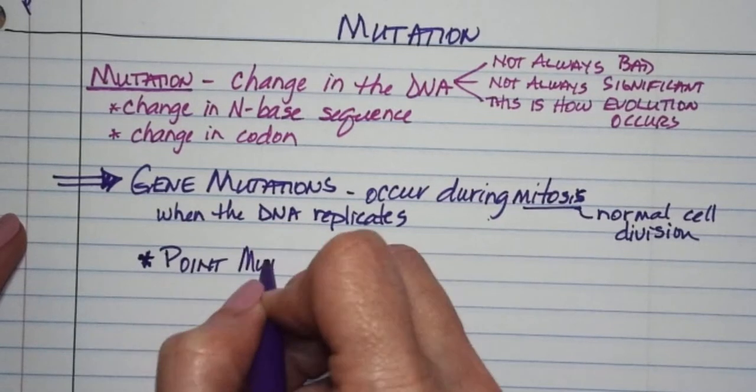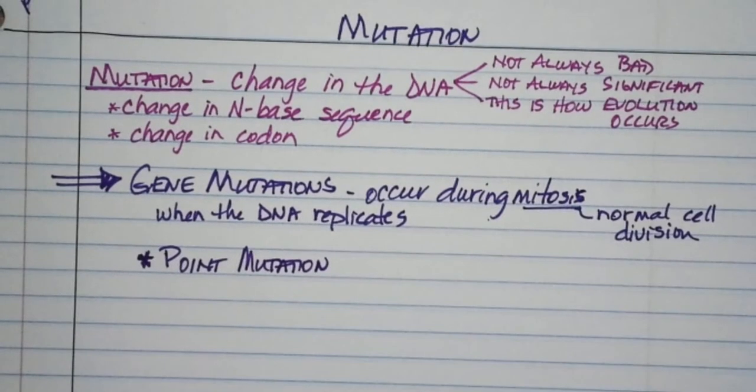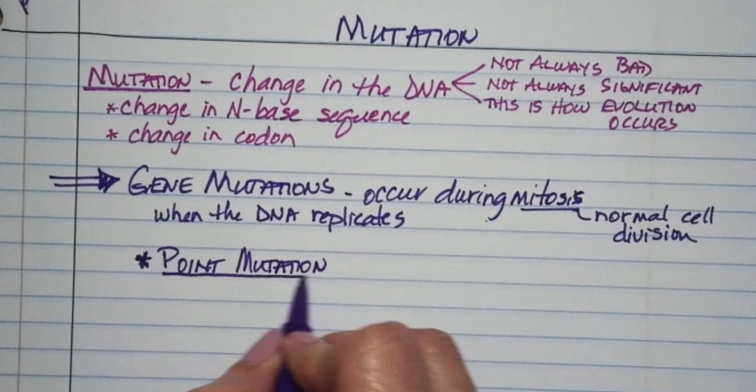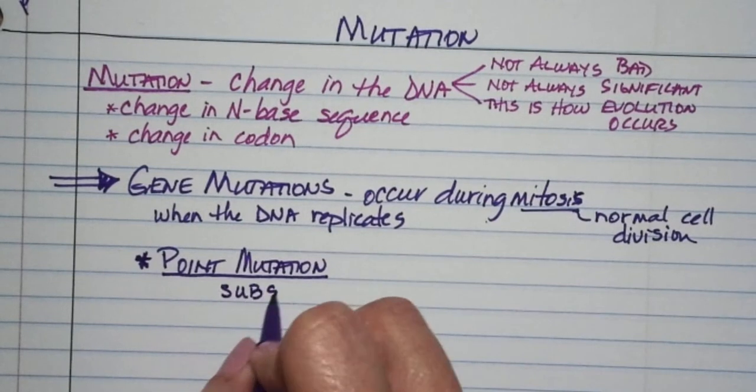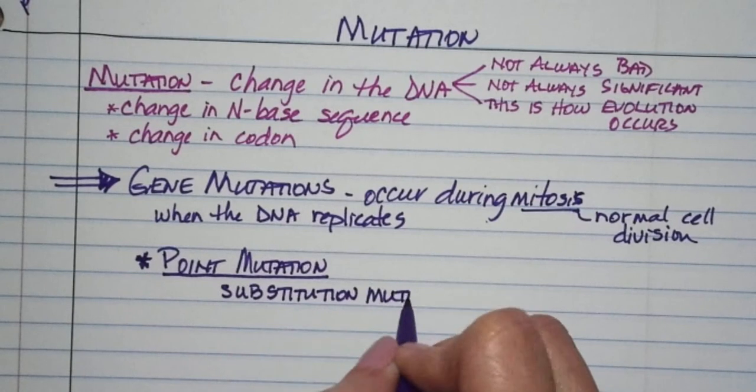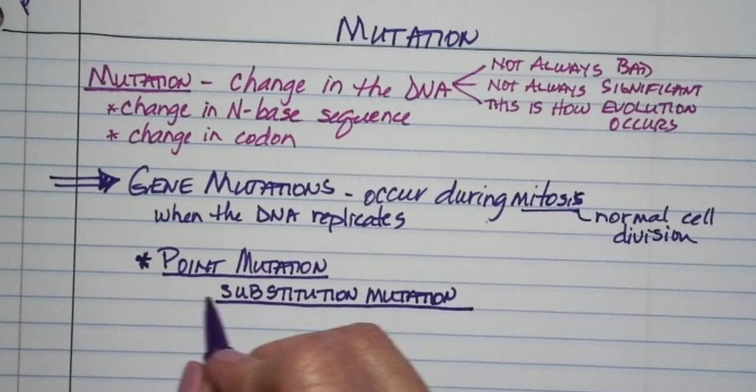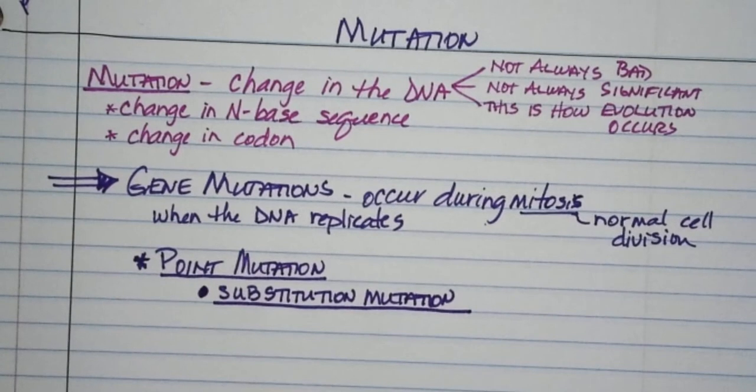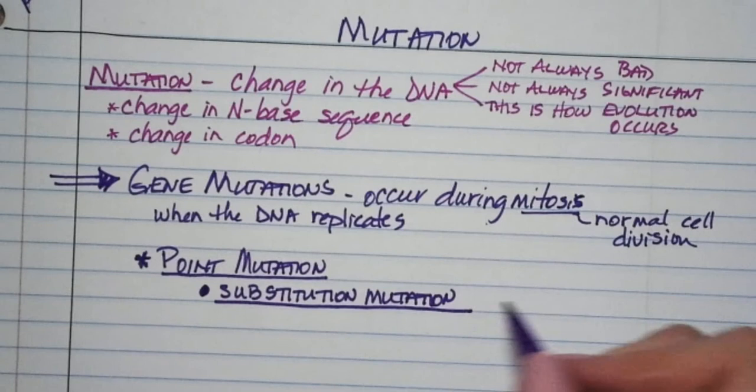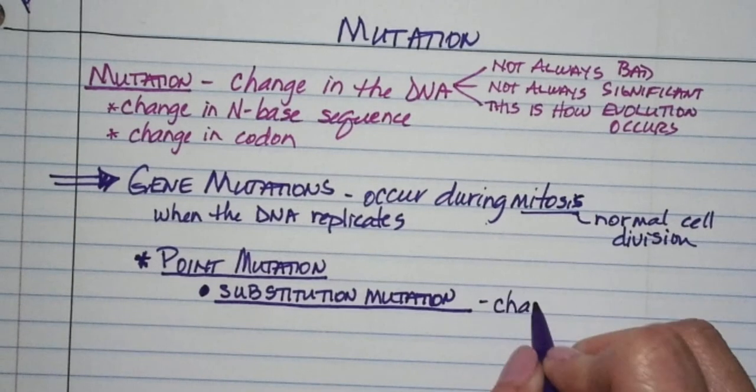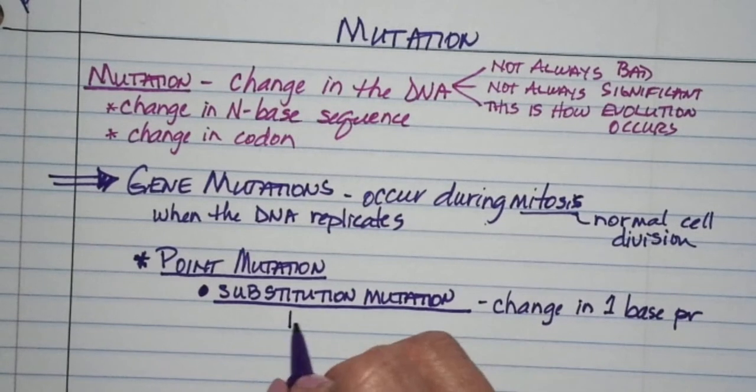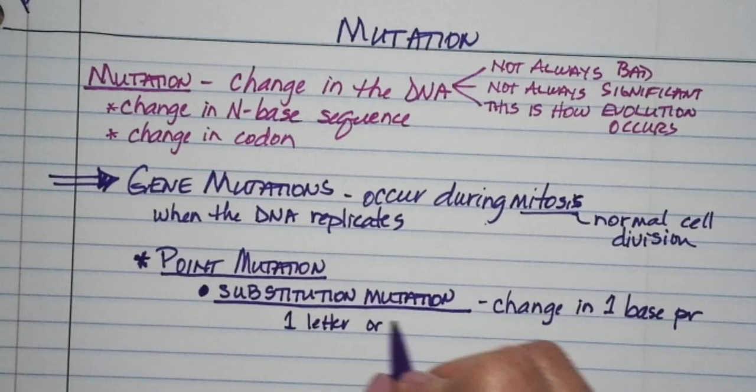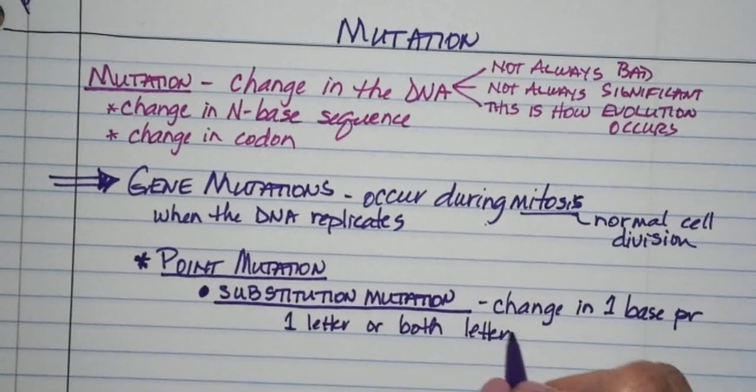There's something called a point mutation. A point mutation is just a mutation at one spot, one point. It would be like a substitution. What does that sound like? Your A, G, C, or T is being replaced with a different letter. So when you have a substitution mutation, one base pair, there's a change in one base pair. It could be one letter or it could be both letters.